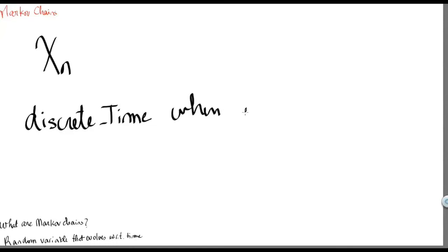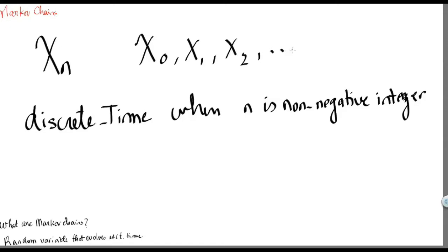A Markov chain is said to be discrete time if n in the random variable X_n is a non-negative integer. So in this case, we'll have an evolution of X_0, X_1, X_2, and so on and so forth, where n takes integer values.